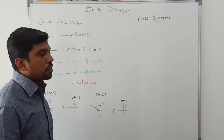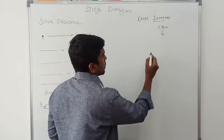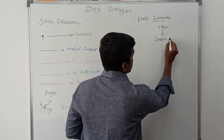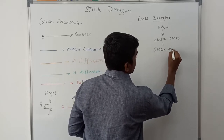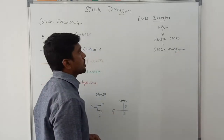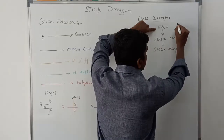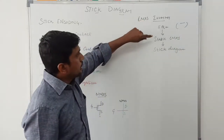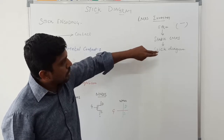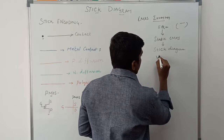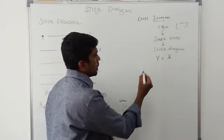Now I am going to draw the CMOS inverter circuit stick diagram. First, consider the equation — based on the equation you can draw the static CMOS circuit. The bar notation is a very important thing. This equation is converted into a CMOS circuit, and afterwards the CMOS circuit is converted to a stick diagram. For the inverter, the equation is A-bar, so A-bar is the output of the CMOS inverter.